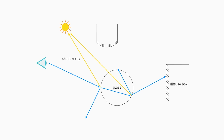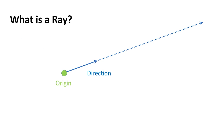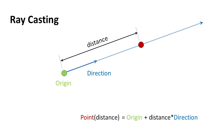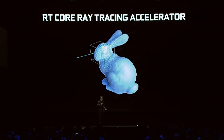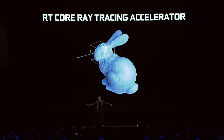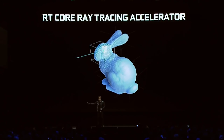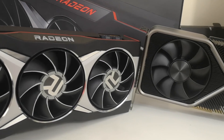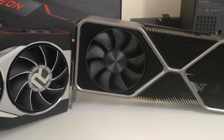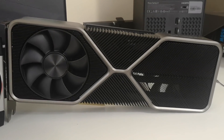Ray tracing is really, really computationally expensive, and it's only in recent years that we've been able to run it in real time. It started with NVIDIA's Turing architecture, which was launched in 2018. Since then, both AMD and NVIDIA have released follow-up graphics cards, and AMD provided the basic architecture for both Microsoft and Sony for their respective systems.